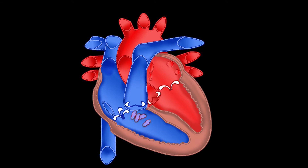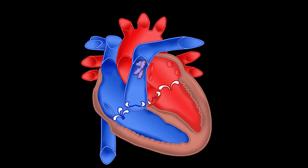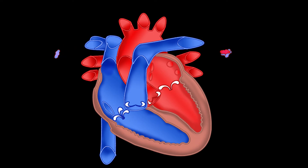As the ventricle contracts, blood leaves the heart through the pulmonic valve into the pulmonary artery. Just by the name — pulmonic valve, pulmonary artery — you can kind of guess where it's going: the lungs. And that's where it gets oxygenated by exchanging the CO2 for O2. Now onto the left side of the heart.